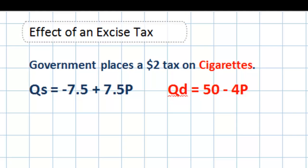In this instance we've now applied linear equations to these graphs, so the demand curve here is represented by the equation QD = 50 - 4P, and the supply curve is represented by the equation QS = -7.5 + 7.5P.